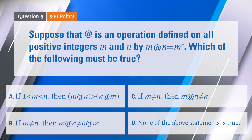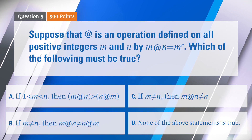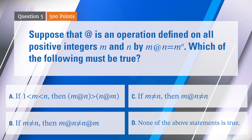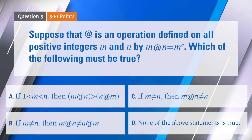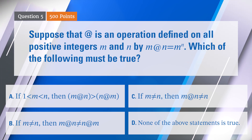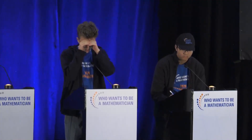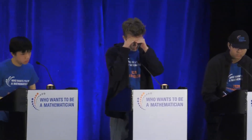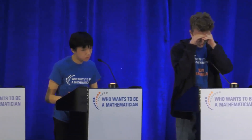Option B: if m is not equal to n, then m @ n is not equal to n @ m. Option C: if m is not equal to n, then m @ n is not equal to n. Or D: none of the above statements is true. You have 45 seconds.